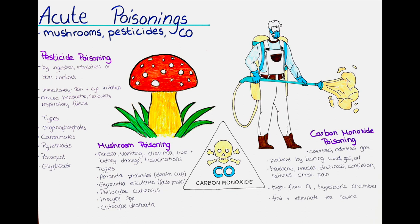Immediate symptoms of pesticide intoxication may include skin irritation, eye irritation and respiratory distress. Other symptoms may include headaches, dizziness, nausea, vomiting, diarrhea, abdominal pain, muscle weakness and seizures. In some cases, symptoms may not appear until days or even weeks after exposure. For example, exposure to some organophosphate pesticides can cause a delayed neurological syndrome, leading to confusion, memory loss and depression several weeks after exposure.